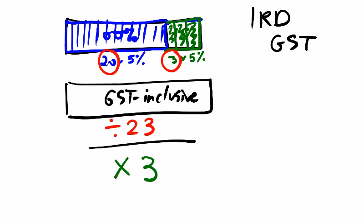So the IRD formula usually says we get the GST inclusive amount, divide by 23, and multiply by 3.